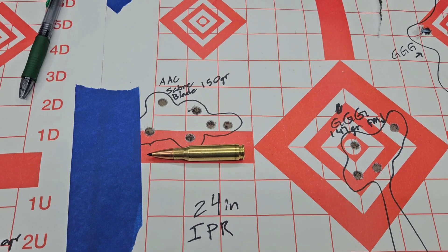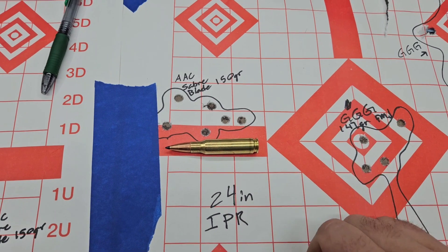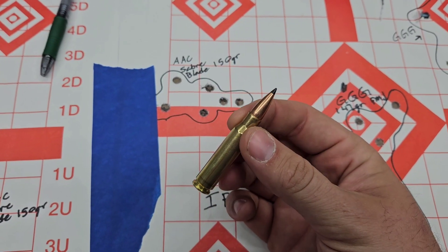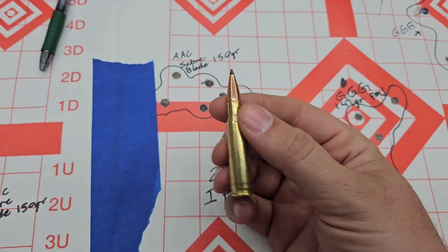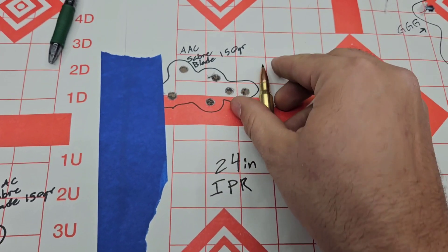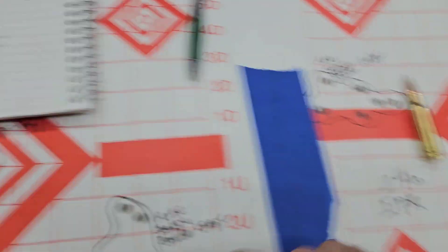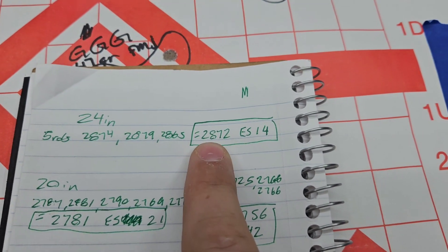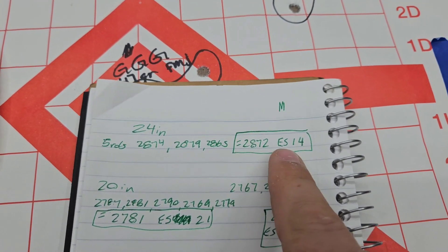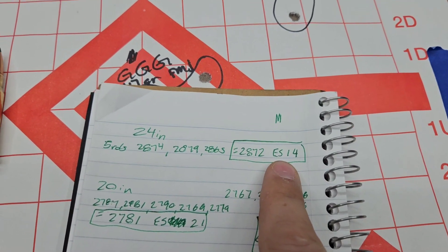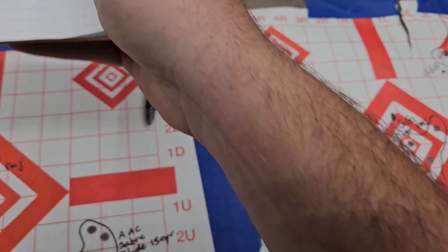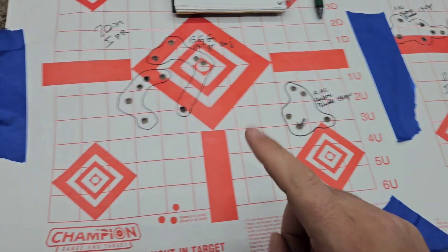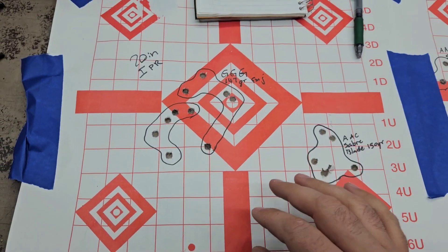Again, it is not precision ammo. This is like self-defense. This would be something that you would find in an AR-10 with a 16, maybe an 18-inch barrel, something like that. Velocities: Out of the 24-inch barrel, we are getting 2872 with an ES of 14. That's not bad at all, especially for a factory ammo that's not advertised as a precision load.